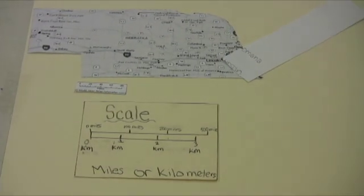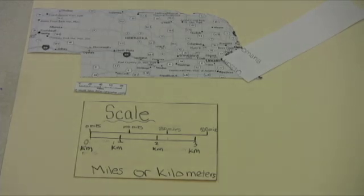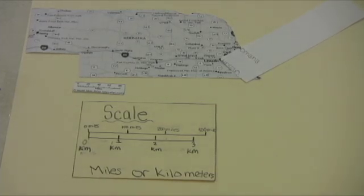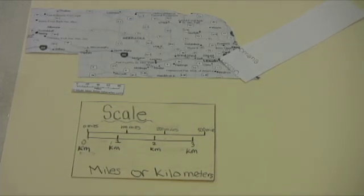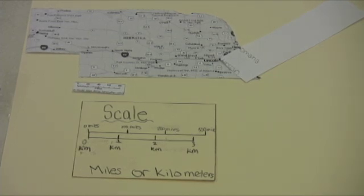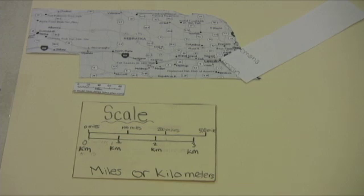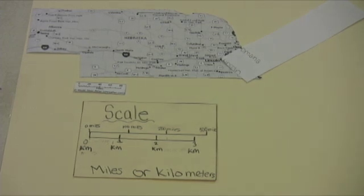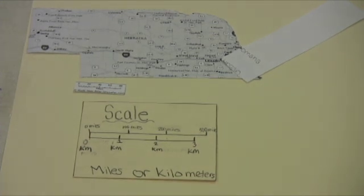To find the distance between two points on the map, place a piece of paper so the edge connects from two points. Mark the location of each point on the paper with a line or dot. Then compare the distance between the two dots with the map scale. The distance from Omaha to Lincoln is about 52 miles.